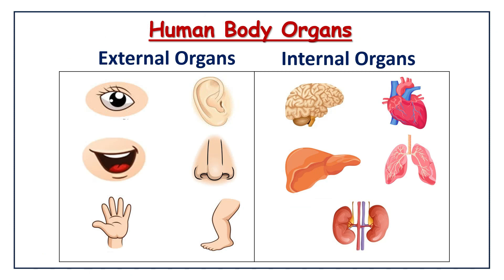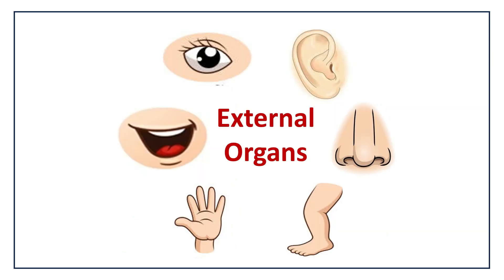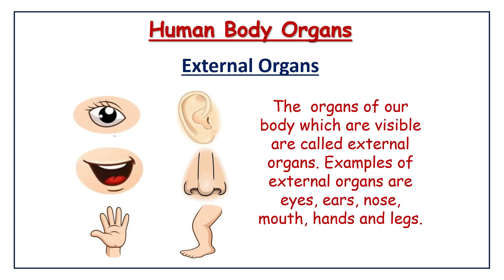Human body organs — external organs and internal organs. These are some external organs. The organs of our body which are visible are called external organs.